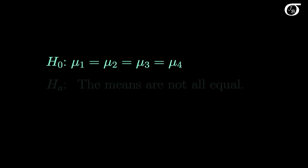And here we're going to test the null hypothesis that the population means of the four groups are all equal, against the alternative hypothesis that the null hypothesis is false. Or in other words, the alternative hypothesis is that the population means are not all equal.